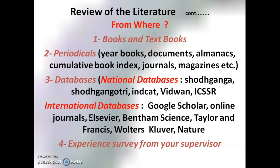Now let's study the sources of review of related literature. The first source is books and textbooks — they are a very rich resource of research works because theories and knowledge are printed in books. The second source is periodicals — these are books, documents, almanacs, journals, magazines, etc., which publish monthly, bimonthly, quarterly, every six months, or yearly within a certain period of time.